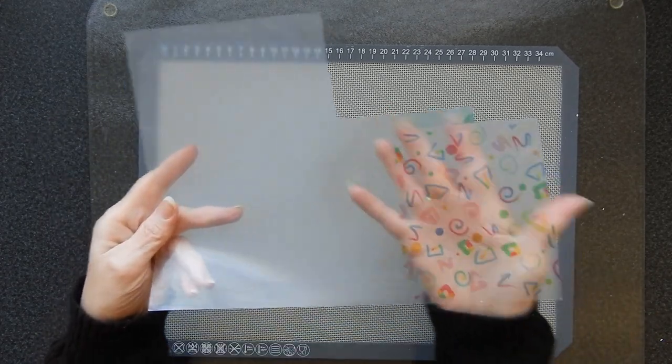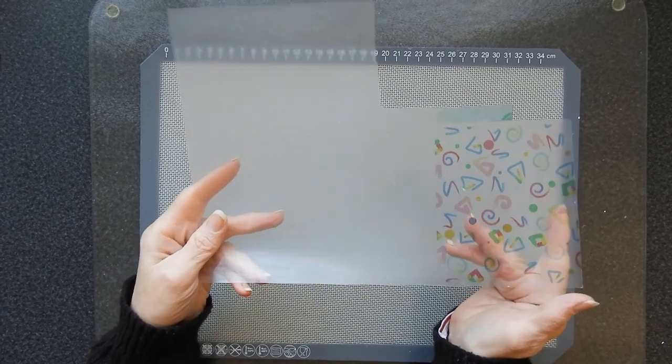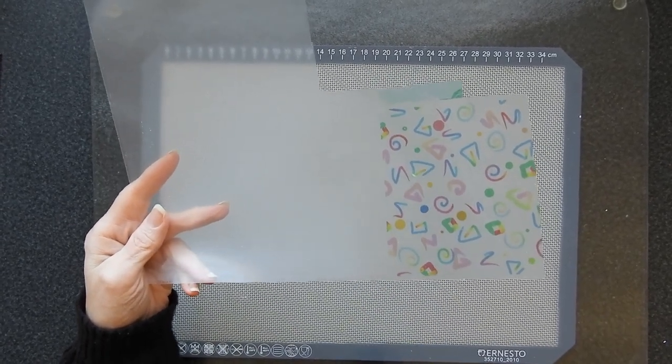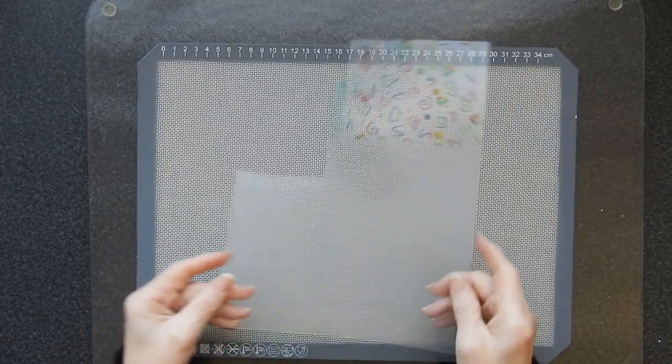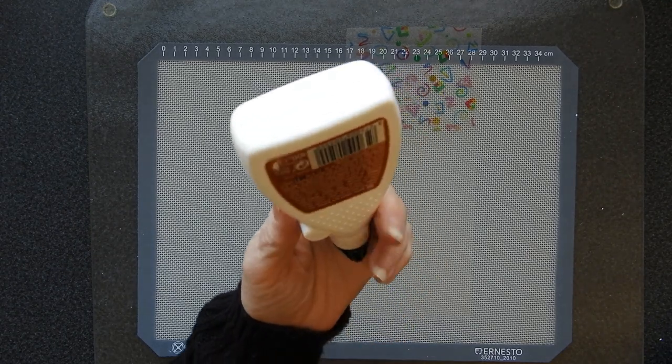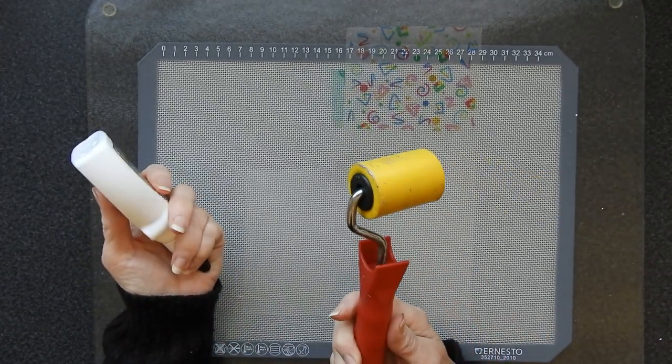I've got this piece which is out of the packet that I just shown you but I have treated it and I have now been able to print on it and it works beautifully. The only thing that you need to do this is some PVA glue. I've got a fast drying wood glue here and a roller.